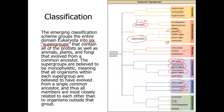So just remember, these are the six supergroups: Excavata, Chromalveolata, Rhizaria, Archaeaplastida, Amoebazoa, and Opisthokonta. The only subgroups we need to learn are within the supergroup Chromalveolata — the alveolates and the straminopiles.